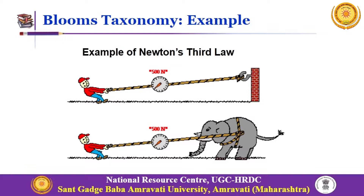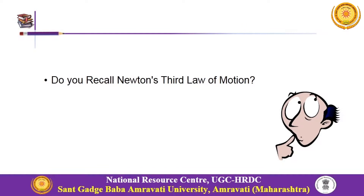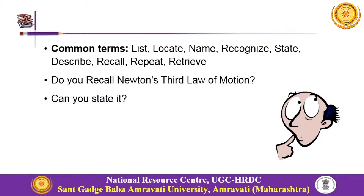Let us understand Bloom's taxonomy with a very simple example — Newton's third law: action-reaction. If I am asking questions touching upon points like recalling Newton's third law, can you state it, and when my learners are able to list, locate, name, recognize, and repeat the law of motion, I have achieved the remembering level of cognitive learning.